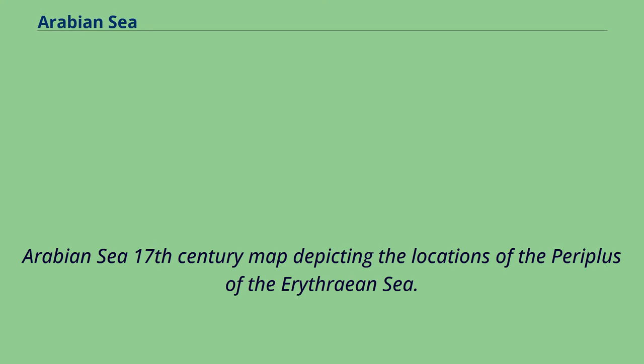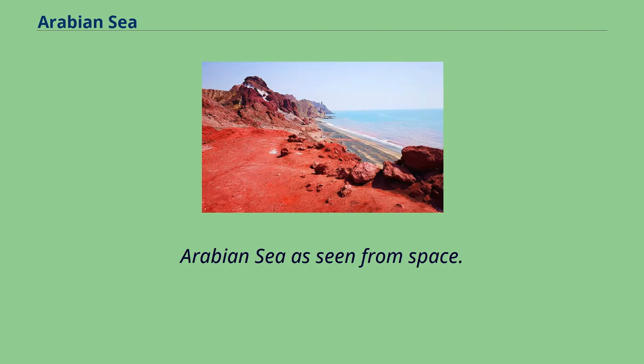A 17th century map depicting the locations of the Periplus of the Erythrean Sea is shown, followed by a view of the Arabian Sea from space.